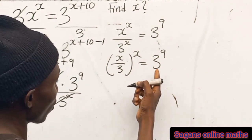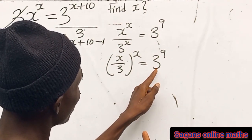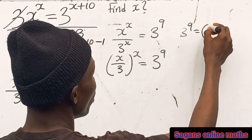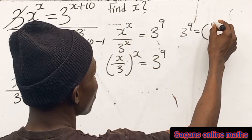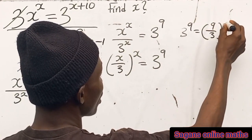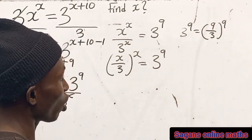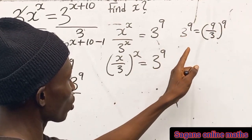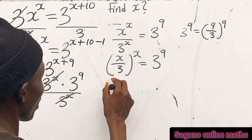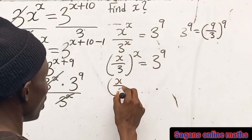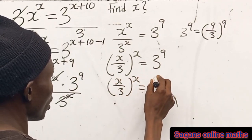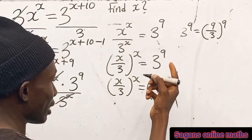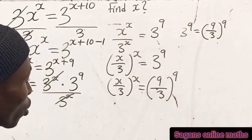This power is affecting both x and 3 because it is a power of a power. Now concentrate on the right-hand side: we have 3 raised to the power of 9. You know that 3 raised to the power of 9 is the same as 9 divided by 3, all raised to the power of 9 — because nine divided by three is three, and the power here is nine. So in place of this we can also write it this way: s divided by 3 raised to the power of s equals 9 divided by 3 raised to the power of 9.